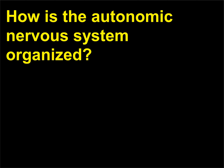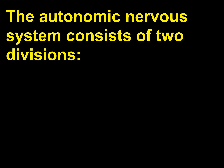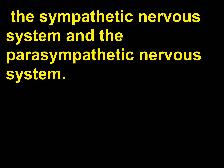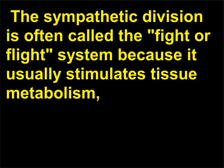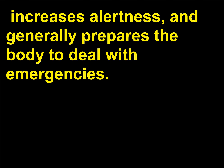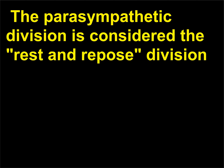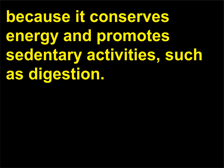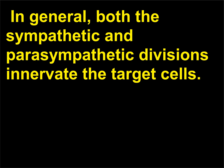How is the autonomic nervous system organized? The autonomic nervous system consists of two divisions: the sympathetic nervous system and the parasympathetic nervous system. The sympathetic division is often called the fight-or-flight system because it usually stimulates tissue metabolism, increases alertness, and generally prepares the body to deal with emergencies. The parasympathetic division is considered the rest-and-repose division because it conserves energy and promotes sedentary activities such as digestion. In general, both divisions innervate the target cells.